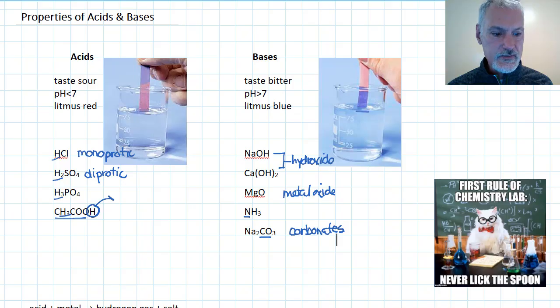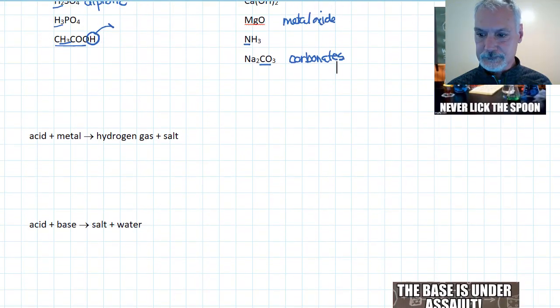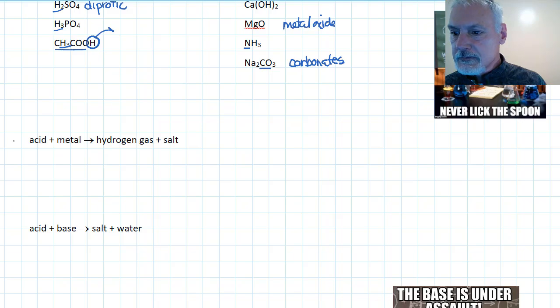Let's take a look at the reactions of these substances. First off, an acid with a metal. Let's say, for instance, I take the metal zinc, and I mix it with hydrochloric acid. The products of that reaction will be hydrogen gas, and some sort of salt made from the combination of this metal and non-metal, zinc chloride.